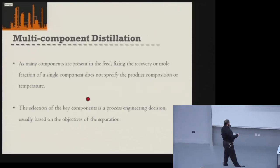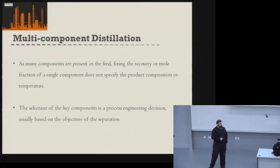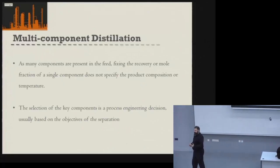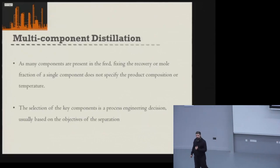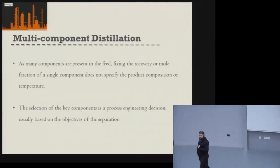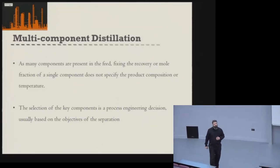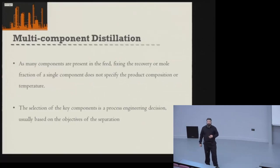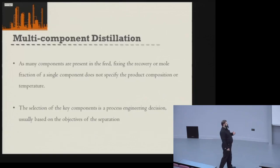We can specify our two key components, but the other components separate based on their relative volatility. The selection of key components is an engineering decision — we as chemical engineers must look at the multi-component system and define the key components based on the needs of our process plant.